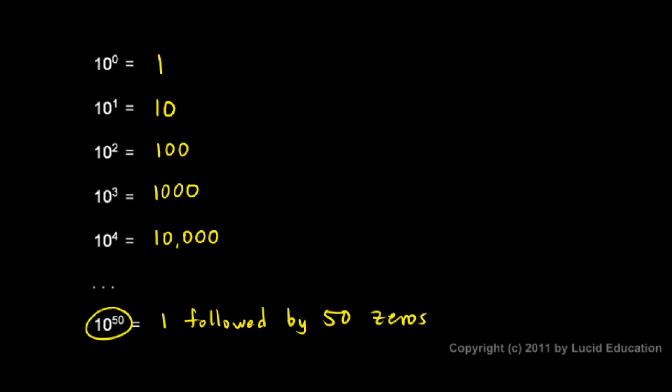Writing it this way, 10 to the 50th, is a lot more convenient than writing out all those zeros. It's also a lot easier to read and a lot easier just to tell how many zeros there are there, because you can just look at the exponent and see that there are 50.